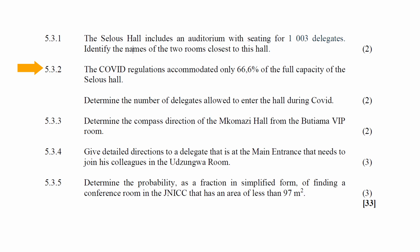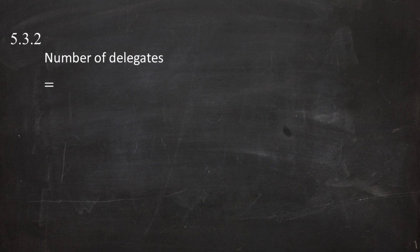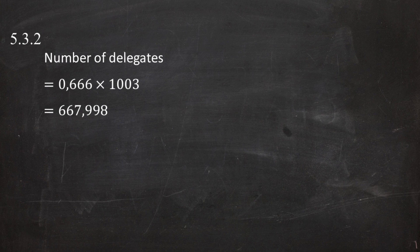In question 5.3.2, COVID regulations accommodated only 66.6% of full capacity of the Seleuze Hall. You are instructed to determine the number of delegates allowed during COVID. Since the hall accommodates 1,003 delegates at full capacity, the COVID-allowed number is 66.6% divided by 100, multiplied by 1,003, which equals 667.998 delegates.